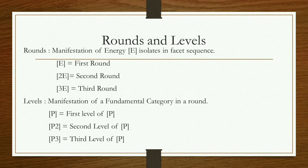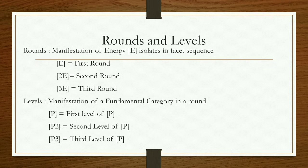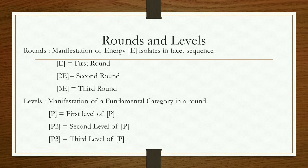In the case of round, I have taken the example of the energy isolate. I have written first E — E means the first round is completed. E indicates the completion of the round. After coming the first E, if in a facet sequence E isolate comes again, then it will be written as 2E. 2E means the second round has completed. Whenever E comes in a facet sequence, the round will be completed. If there is 1E, 1 round is completed; if there is 2E, 2 rounds are completed; if there is 3E, 3 rounds are completed.